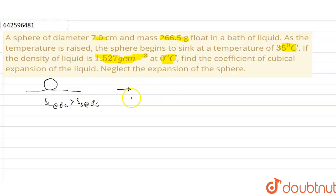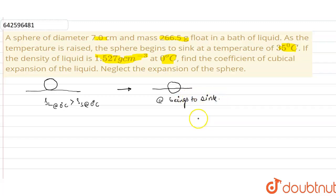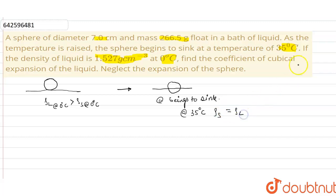The sphere begins to sink. This will happen when the density of the sphere becomes equal to the density of the liquid — then it will start sinking. So at 35 degrees Celsius, the density of the sphere will be equal to the density of the liquid.